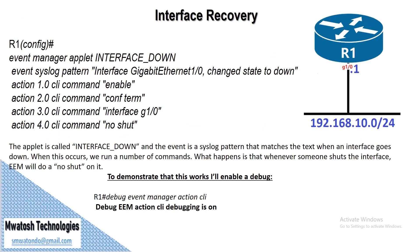Our task is to perform an interface recovery. We configure EEM on Router 1. The applet is called 'interface down' and the event is a syslog pattern that matches the text when an interface goes down. When this occurs, we run a number of commands — whenever someone shuts the interface, EEM will automatically do a 'no shut' on it.